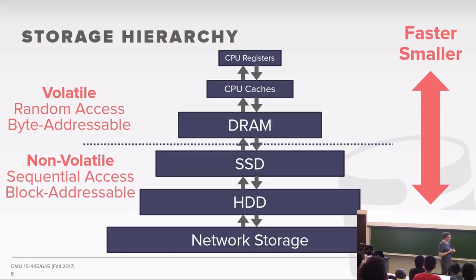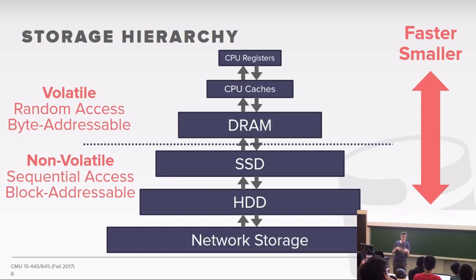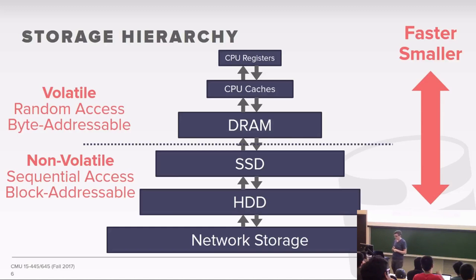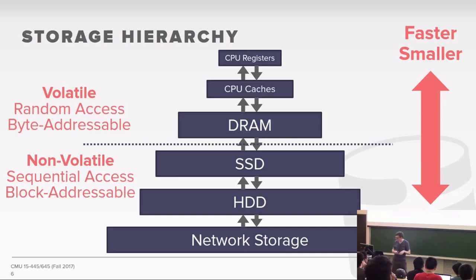The textbook might show the same hierarchy but put magnetic tapes at the bottom — old tape archive technology. Amazon sells a service called Amazon Glacier which is similar archival storage with really long latency. By network storage, I mean something like Amazon S3 or Amazon EBS. Underneath the covers those services use spinning disk hard drives or SSDs, but because there's network latency to retrieve the data, they're going to be slower than the other local devices.